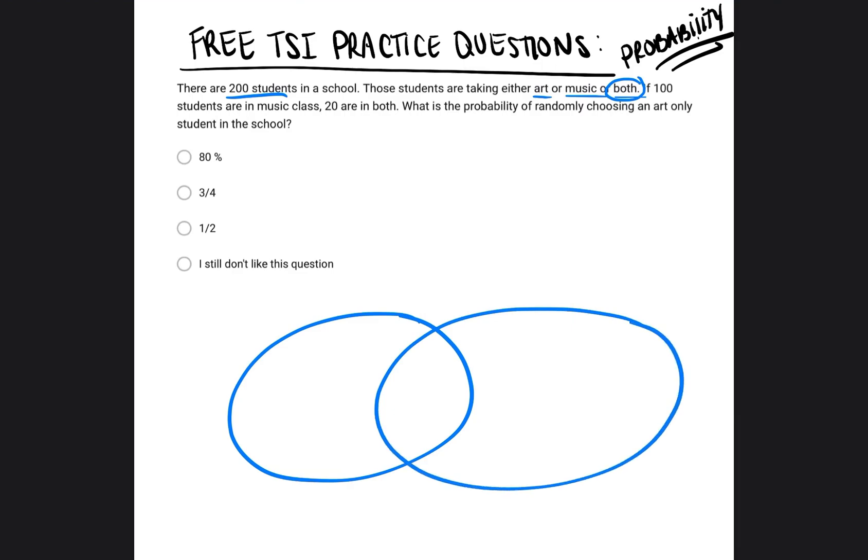And these students, they're going to be taking art. So I'm going to write art on this side. The middle always represents both. How many students are going to be in both art and music? And on the right, I'm just going to write music. So it says if 100 students are in music class, so 100 students are taking music, 20 are in both. I'm just writing down this information just so I can see it outside of the question.